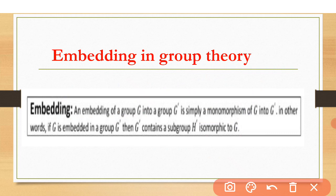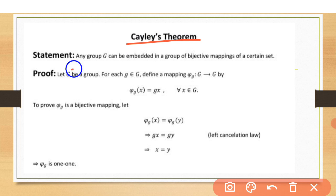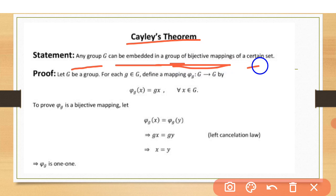Now let's come to Cayley's theorem. Cayley's theorem states: any group G can be embedded in a group of bijective mappings of a certain set. If a bijective mapping has been found, then G can be easily embedded into that group.